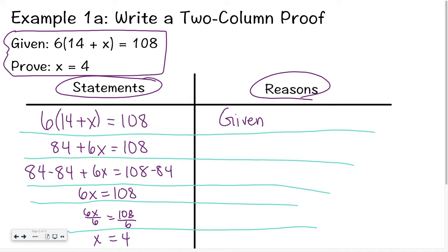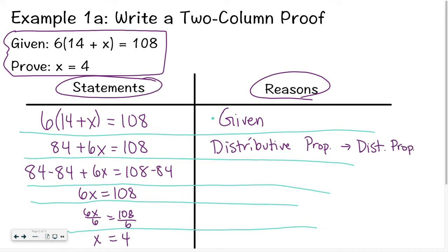In that first step, we had our given. Then what changed between that first step and that second step? I distributed that 6 — I used the distributive property. If you want to abbreviate that to dist prop to save time, I'm okay with that. Then the next one, I subtracted 84 from both sides, so I used the subtraction property.